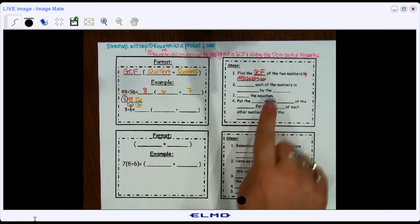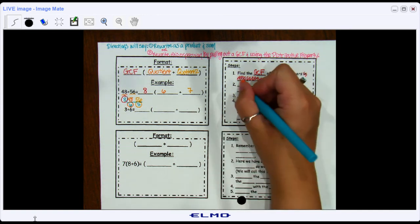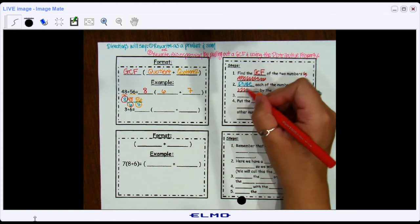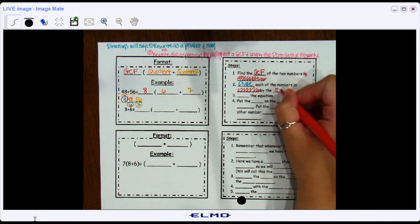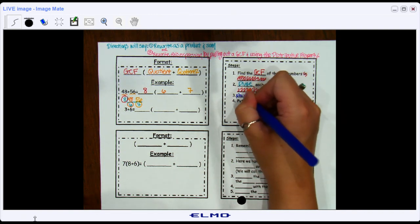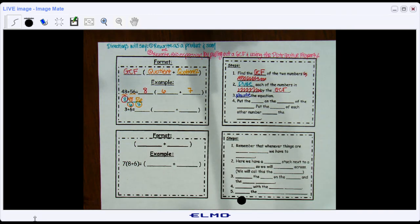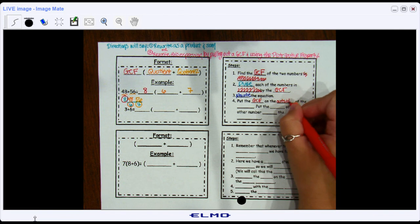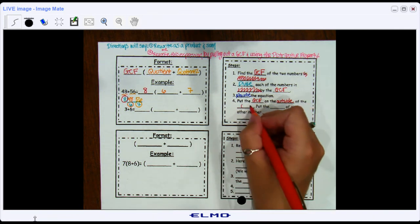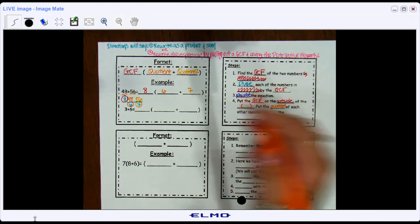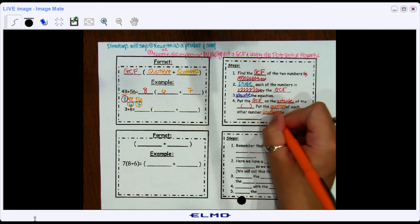So what we did is we first found the GCF. Then we divided each number by the GCF. After we did that, we rewrote the equation so that it looked like this. We put the GCF on the outside of those parentheses, and we put the quotient of each of those numbers on the inside of the parentheses.